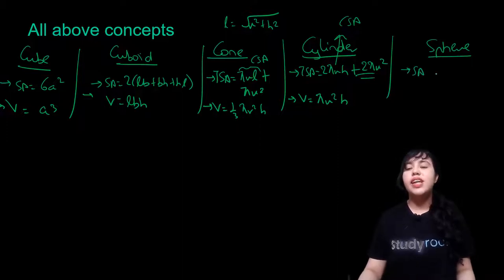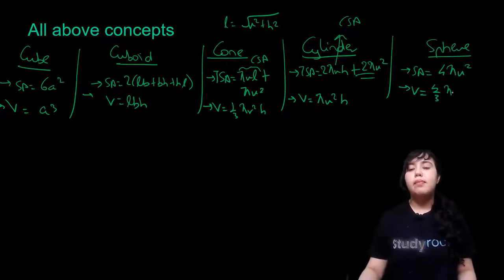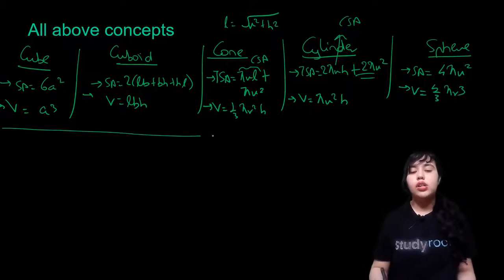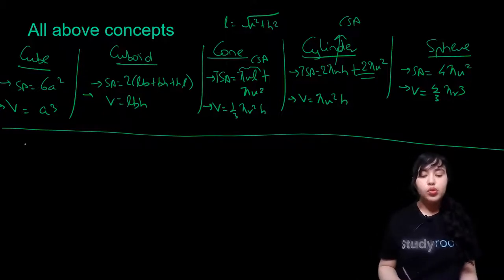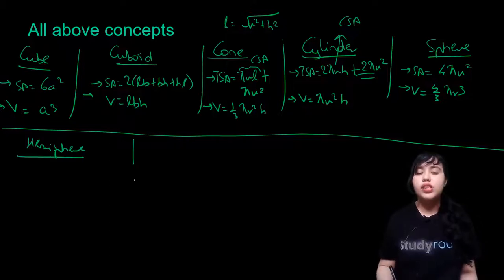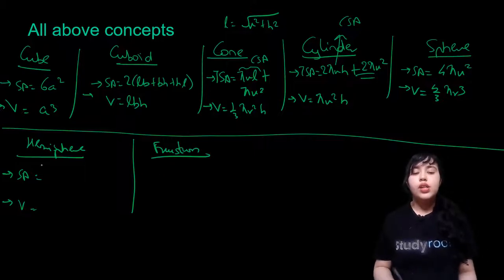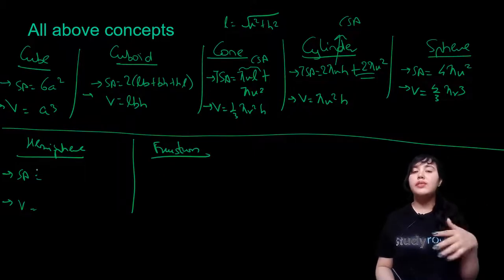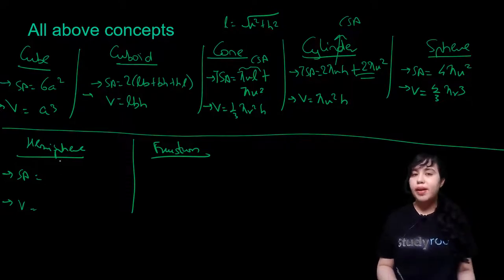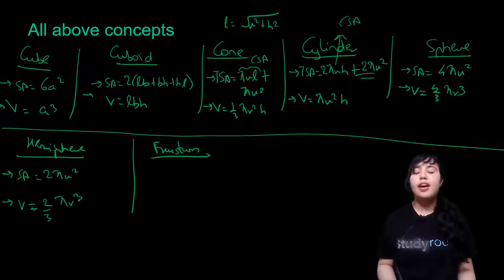For a hemisphere: curved surface area = 2πR², and volume = (2/3)πR³ — just half the sphere's values. For the frustum of a cone with R1 > R2, height H, and slant height L = √(H² + (R1−R2)²): curved surface area = π(R1+R2)L.